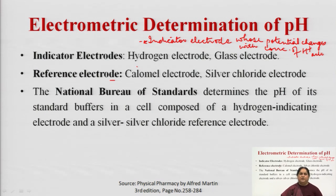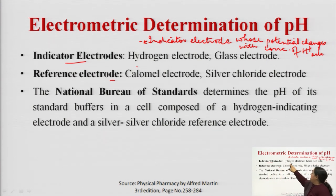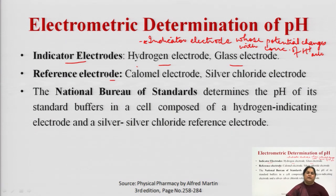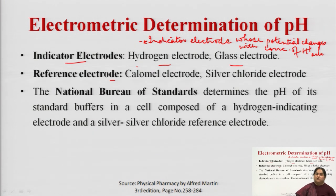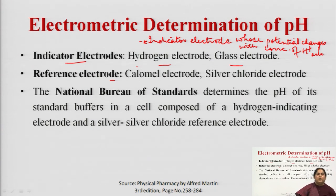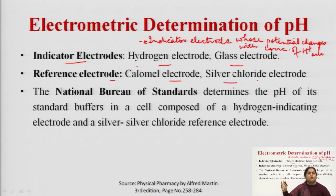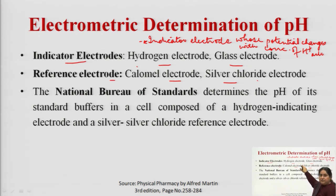If there is a change in the hydrogen ion concentration, the potential of the electrode will automatically change, making it suitable for determining pH — hence it is known as the indicator electrode. We have two examples: the hydrogen electrode and the glass electrode. For reference electrodes we have the calomel electrode and the silver-silver chloride electrode.